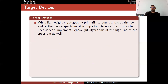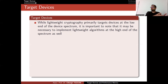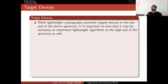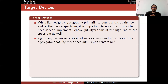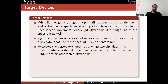While lightweight cryptography primarily targets low-end devices, it may also be necessary to implement lightweight algorithms at the high end of the spectrum as well. Just remember the IoT definition — although we have very small devices like sensors, they communicate with aggregators, and aggregators communicate with computers and so on. Even if you implement these algorithms on small devices, at the end they have to talk to high-end devices. For example, many resource-constrained sensors may send information to an aggregator that by most metrics is not constrained. However, the aggregator must support lightweight algorithms in order to interoperate with the constrained sensors.